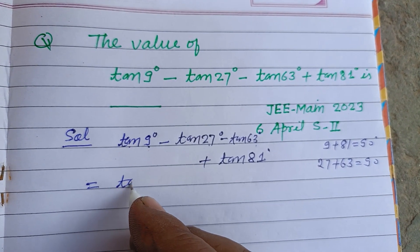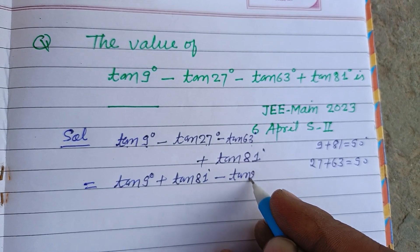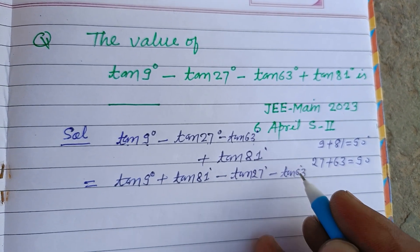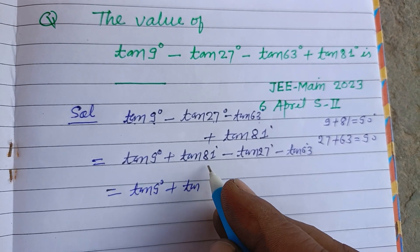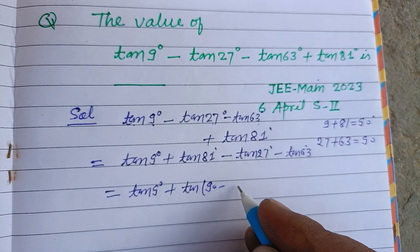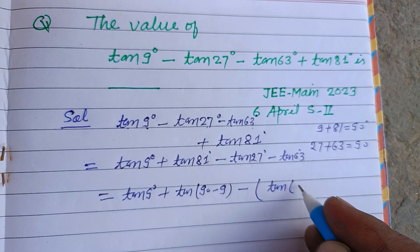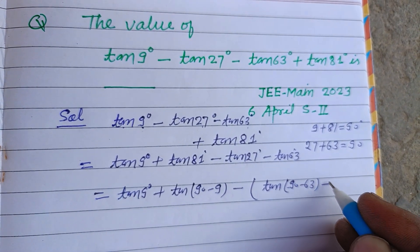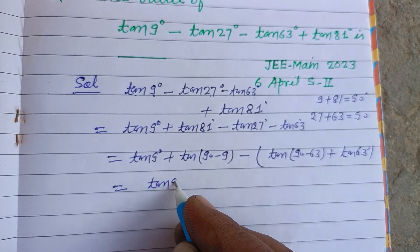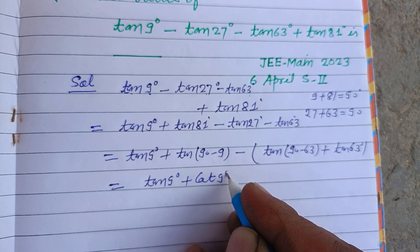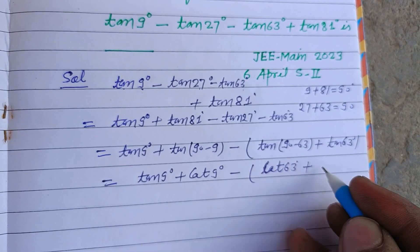We take the complementary angles together: tan9° plus tan81° minus tan27° minus tan63°. Now tan9° plus tan81° is written as tan9° plus tan(90°−9°). Since tan(90°−θ) equals cotθ, this becomes tan9° plus cot9°. Similarly, tan27° becomes tan(90°−63°) which is cot63°, giving us cot63° plus tan63°.